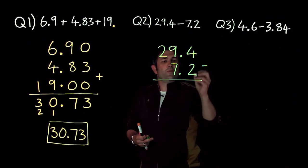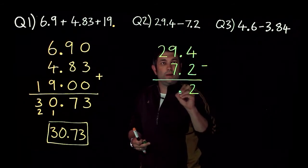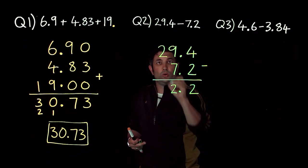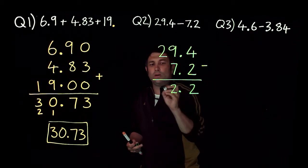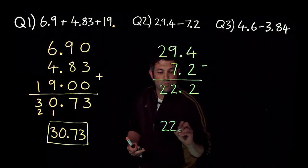Nice and easy 4 take away 2 is 2. Decimal point goes in there, 9 take away 7 is 2 and 2 take away, oh there's nothing there so 2 take away 0 is also 2 and we've got 22.2.